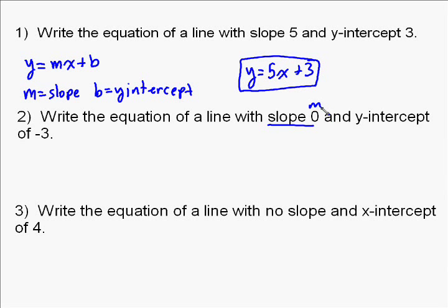This next one has a little bit of a variance to it because our slope is 0. And so let's see what happens when our slope is 0. It's going to be y equals 0 times x plus b, which is negative 3. So you get y equals 0 plus negative 3. However, 0 times anything is 0, so it goes away. So you're just left with y equals negative 3.